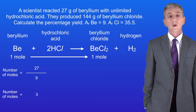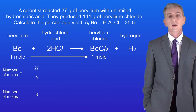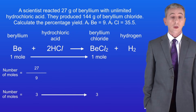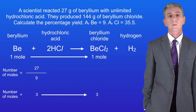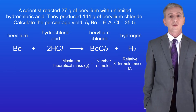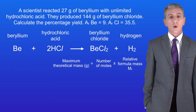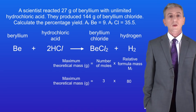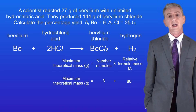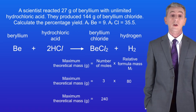From the equation we know that one mole of beryllium could produce one mole of beryllium chloride. Therefore three moles of beryllium could produce three moles of beryllium chloride. To calculate the mass of beryllium chloride we could produce, we multiply the number of moles by the relative formula mass of beryllium chloride, which is 80. Three moles multiplied by 80 tells us we could produce 240 grams of beryllium chloride.